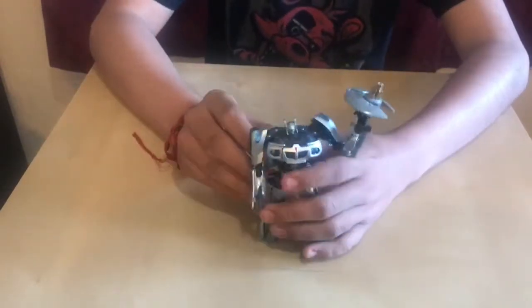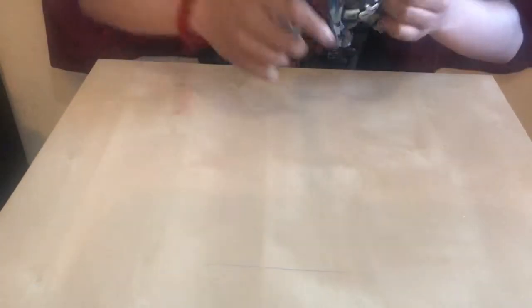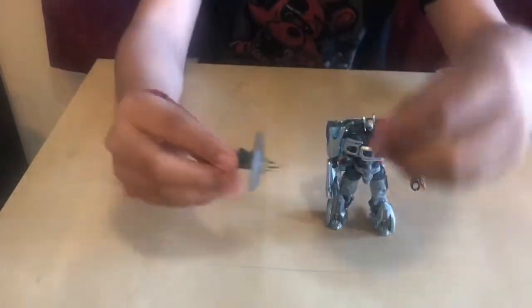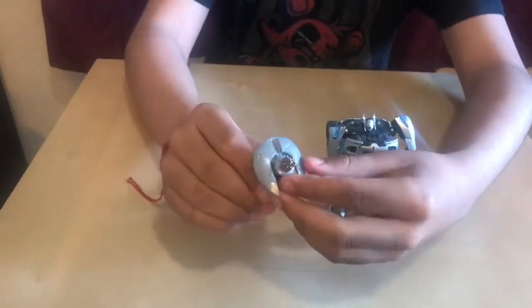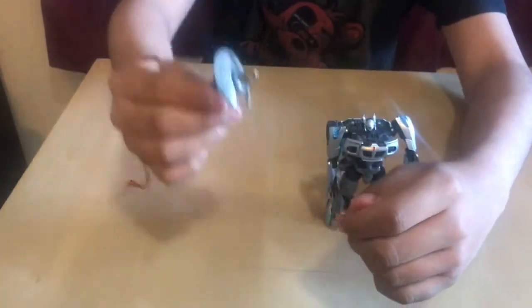Alright, so this is how he comes out of the packaging. So let's look at his accessory first. So his accessory is this little gun shield thing that he had in the first movie. Pretty cool.